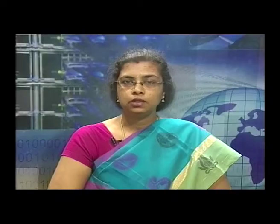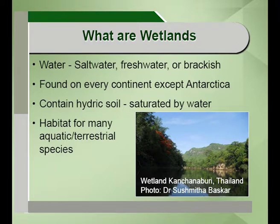Mainly, the water in the wetlands can be of three types: salt water, fresh water and brackish. They are found on every continent except Antarctica. The world's largest wetlands are found in the Pantanal, which straddles Bolivia, Brazil and Paraguay in South America. Most of the world's wetlands are found north of the equator between 50 and 70 degrees north latitude and are comprised of the peatlands.